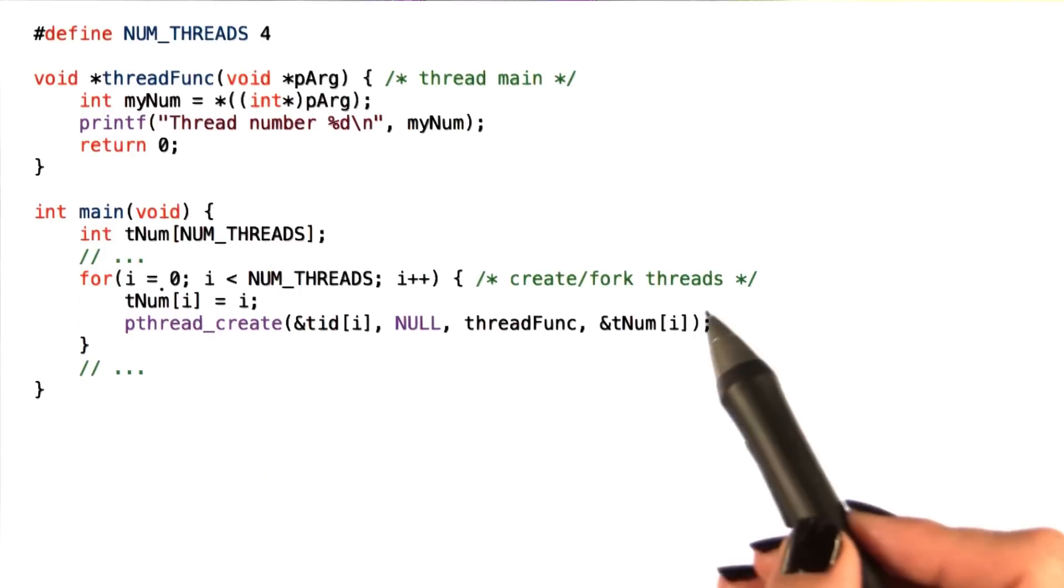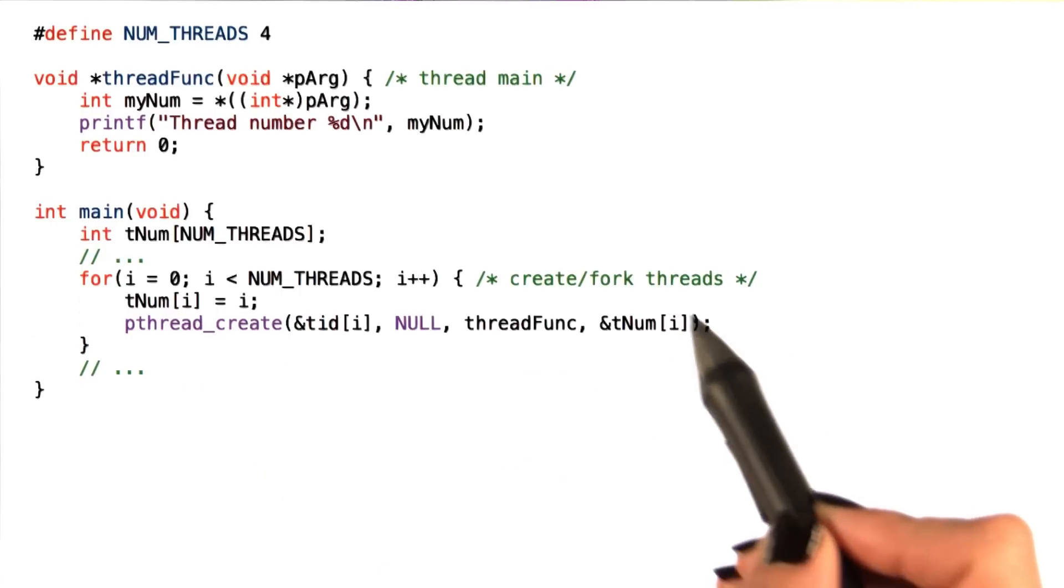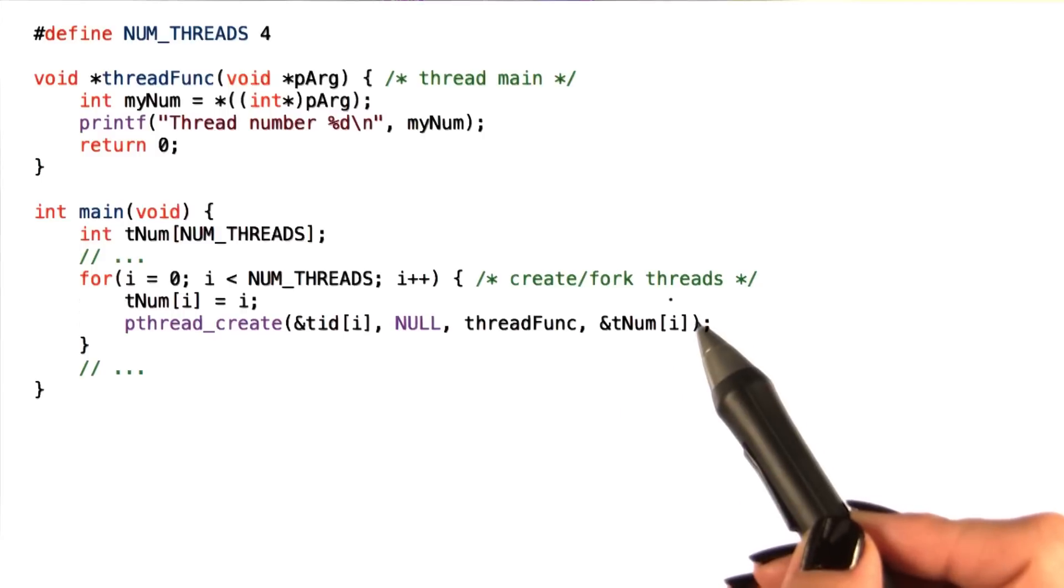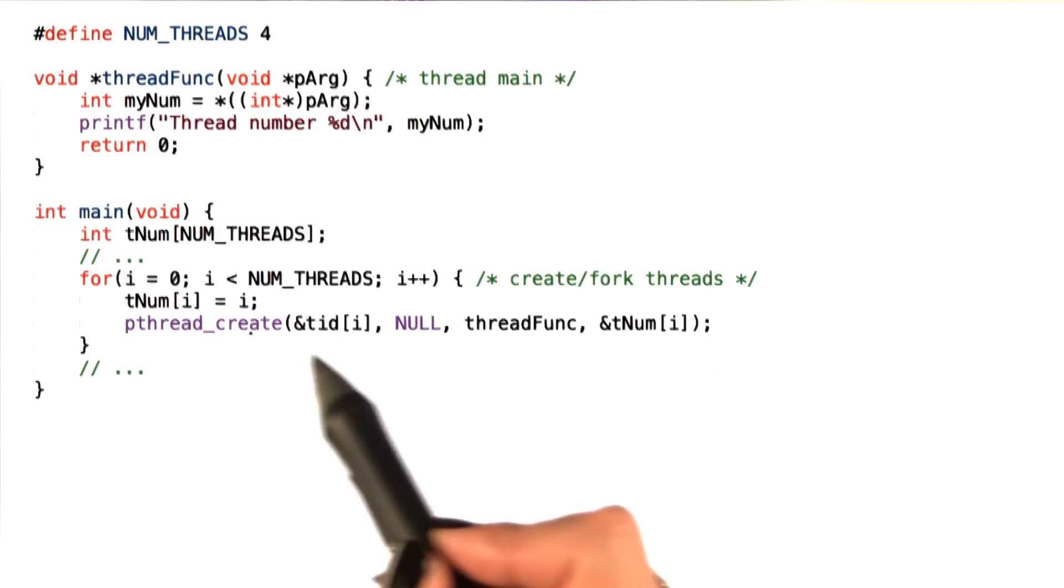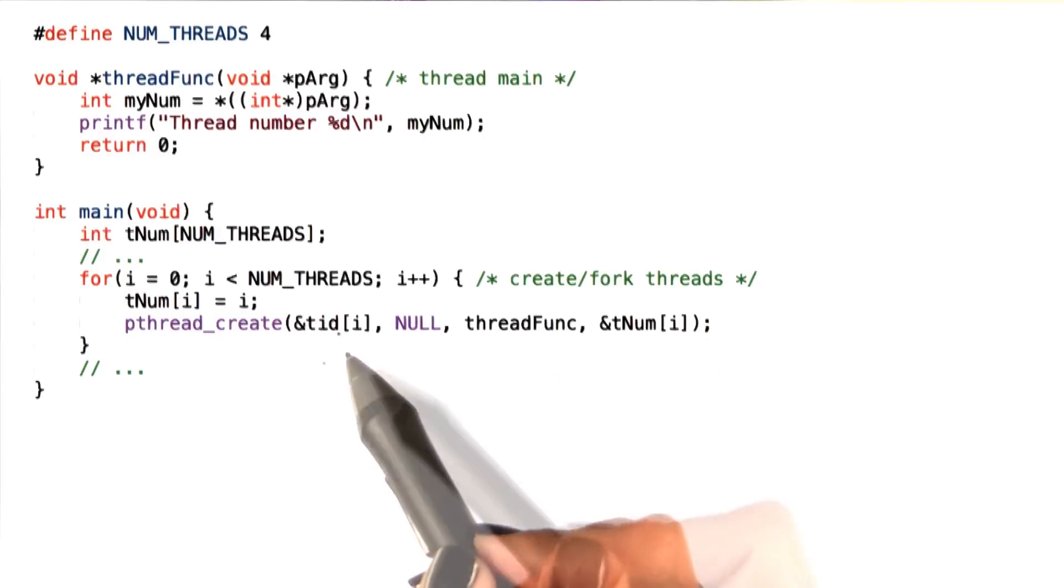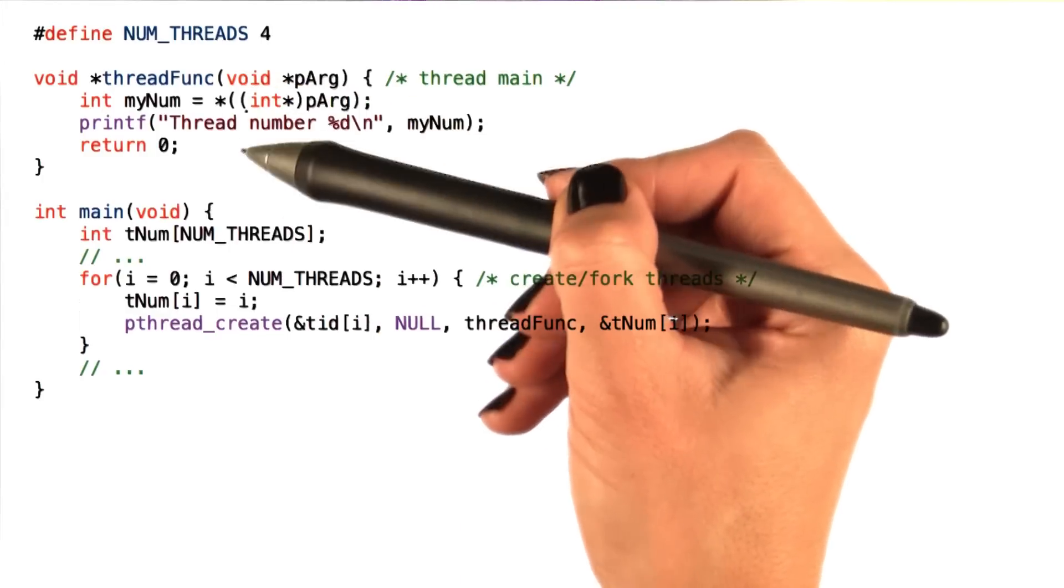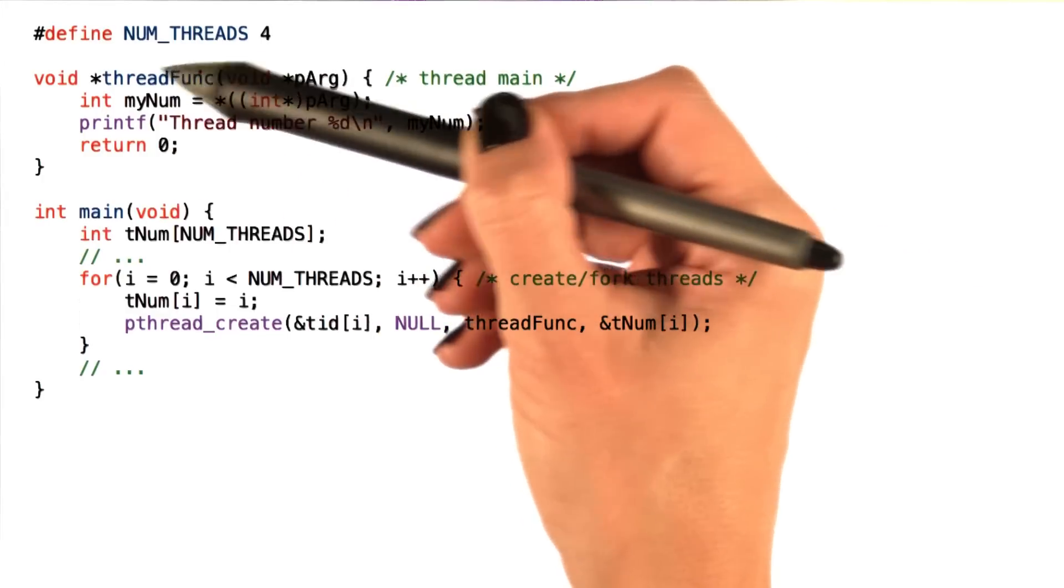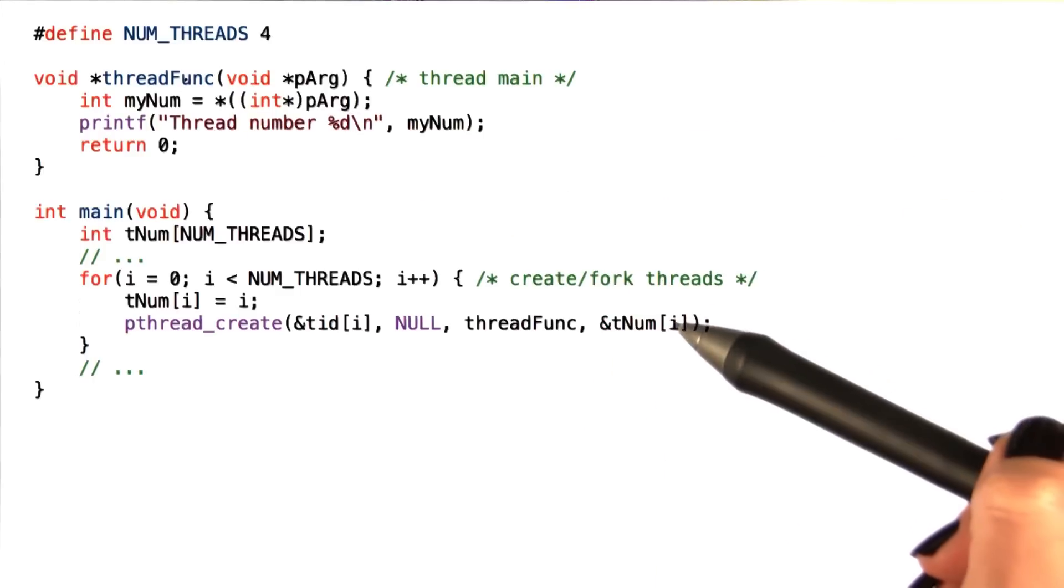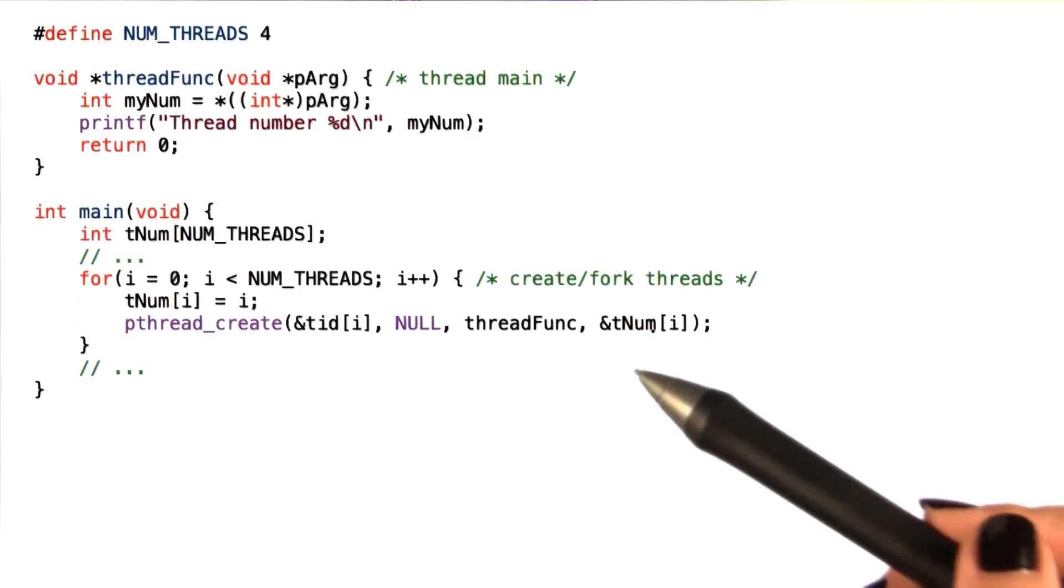By creating this array, it's like we created local storage or private storage for the arguments of every single one of the threads that we create. Now we don't have to worry about the ordering of how the new threads will execute the operations, because every one of them will have their own private copy of the input arguments that won't change.